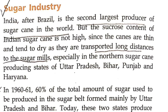Indian sugarcane tends to dry up because when transported over long distances to sugar mills, especially in the northern India sugarcane-producing states of Uttar Pradesh, Punjab, Bihar, and Haryana — particularly UP and Bihar — the distance from fields to mills means the cane dries out quickly. Their thickness (moatapa) is also somewhat less.